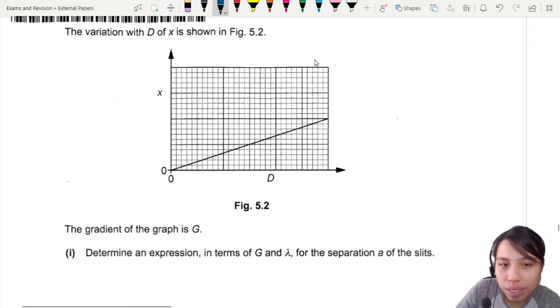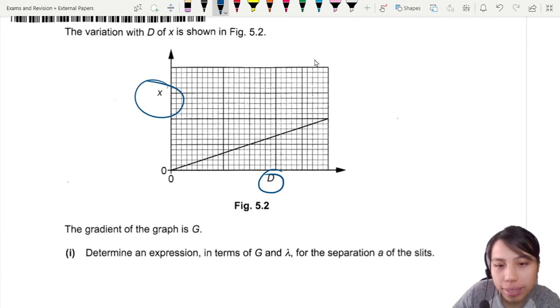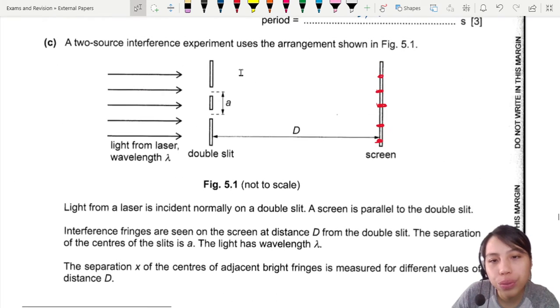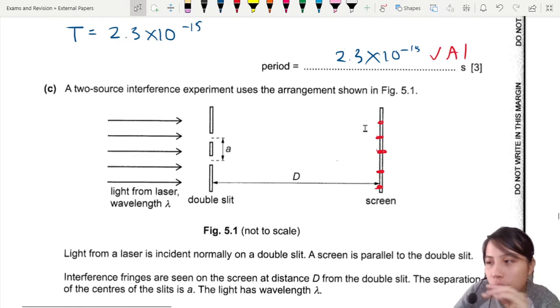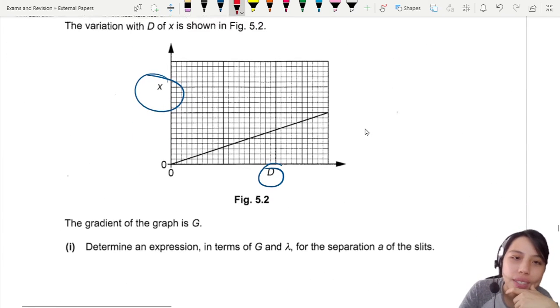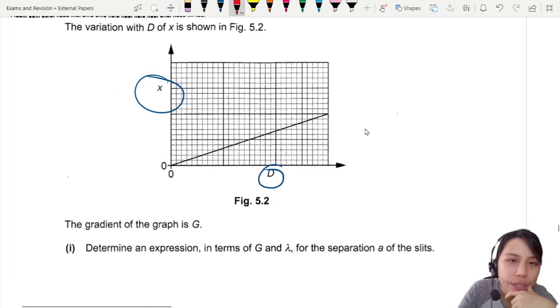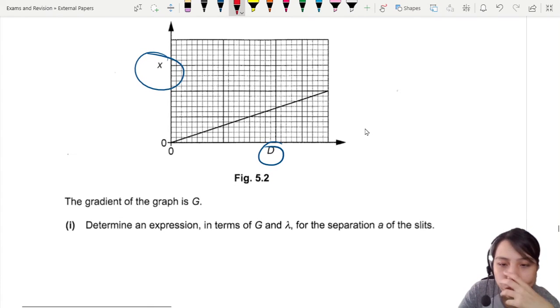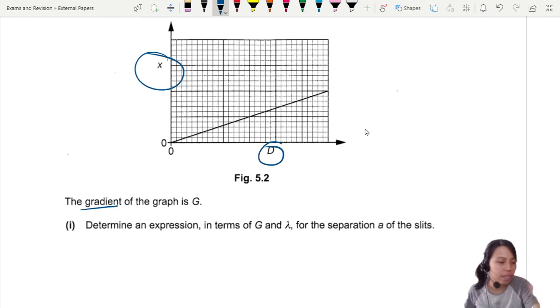There's a graph. It's an experiment. The graph of d over x is shown, so you are changing d and you measure x. You move this screen closer and further, closer and further, and you see how far apart these fringes are. The first thing they ask is: gradient of graph is G, determine expression for the separation of the slits.